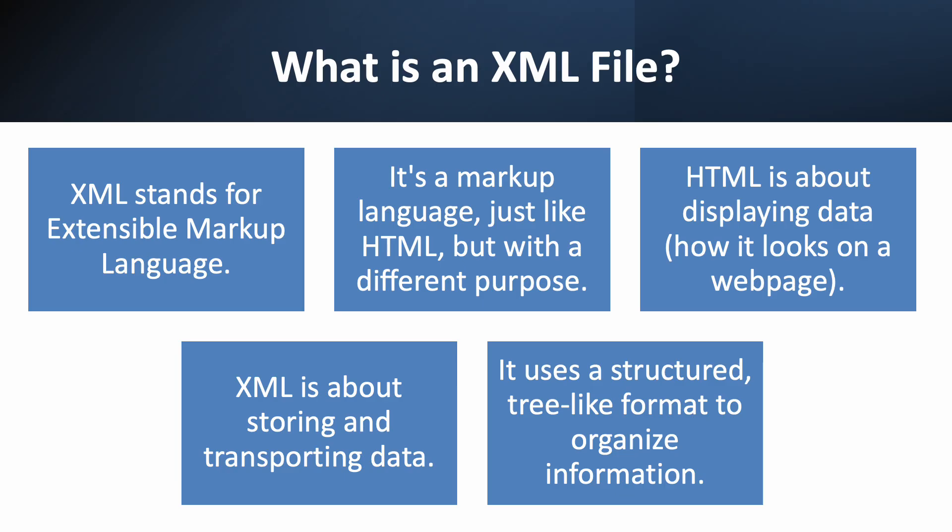First things first, what exactly is an XML file? The name XML stands for Extensible Markup Language. It's a markup language, which means it uses tags to define elements, just like HTML. But here's the key difference: HTML is all about how data looks — it tells a web browser to make text bold or where to place an image. XML, on the other hand, is all about the data itself. It's a simple, plain text way to store and transport data between different systems. It doesn't care about the presentation — it organizes information using a logical, tree-like structure of custom tags.